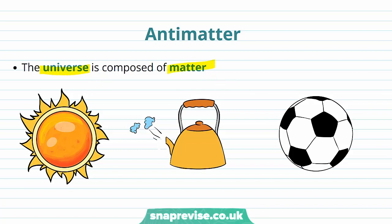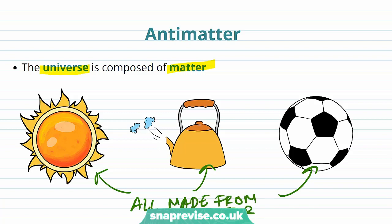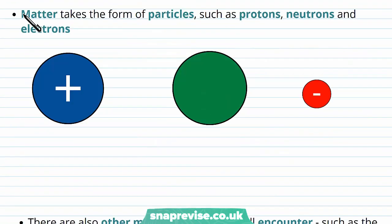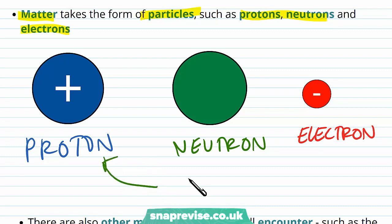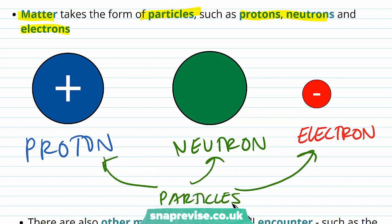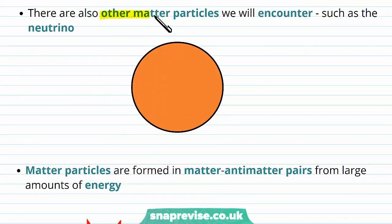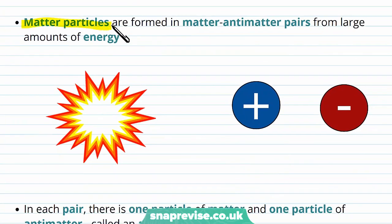The universe is composed of matter, so everything in the universe is made out of matter. For example, the sun, this kettle, and this football are all made from matter. The matter they're made from is very different, which is why they all look different and have different properties. Matter takes the form of particles such as protons, neutrons, and electrons. There are also other matter particles we will encounter, such as the neutrino.